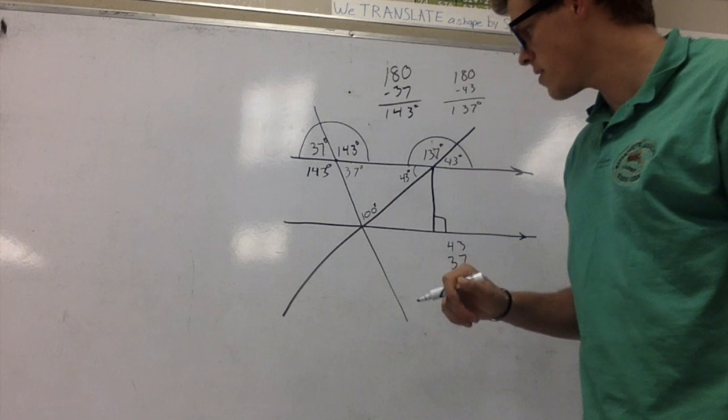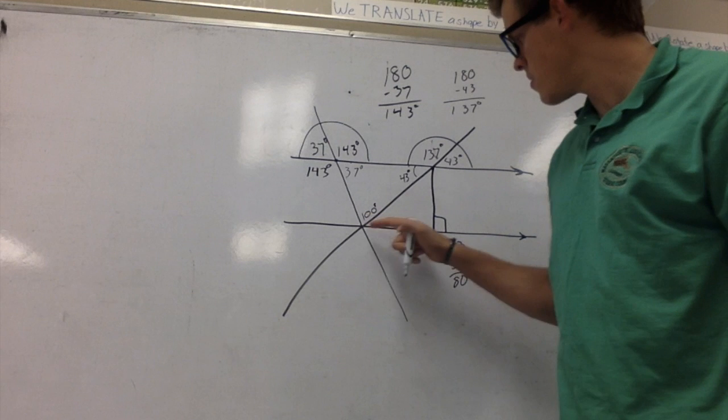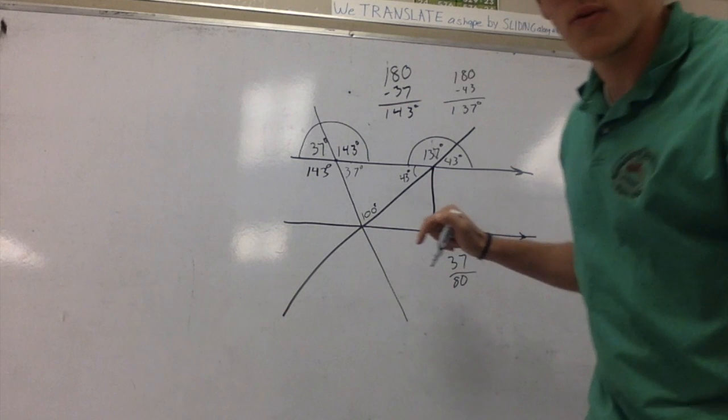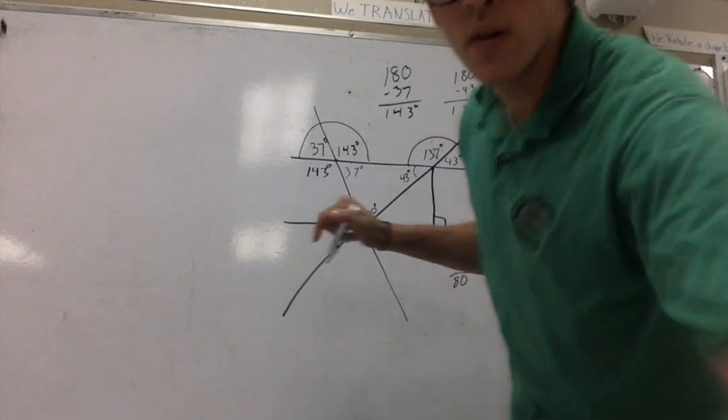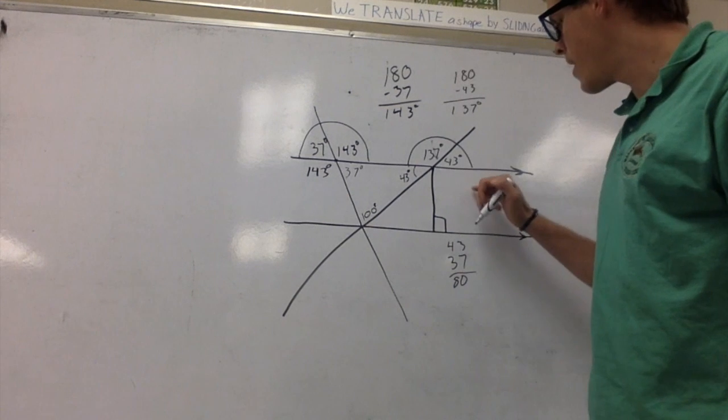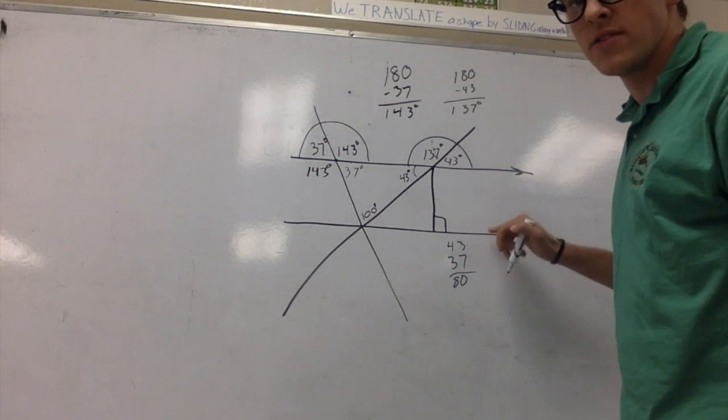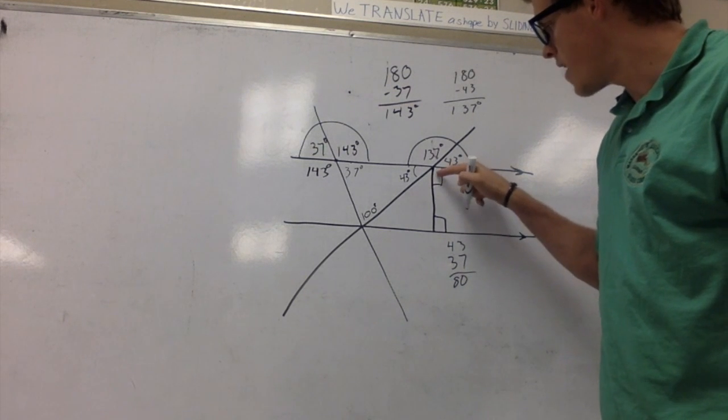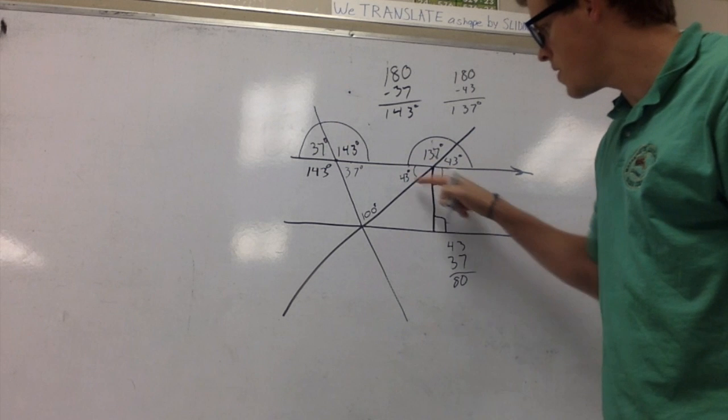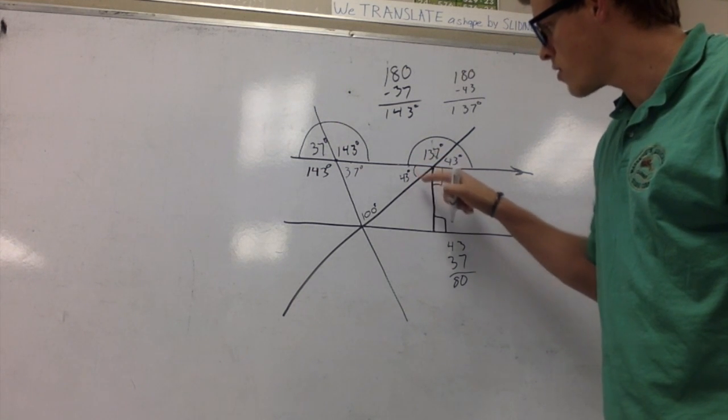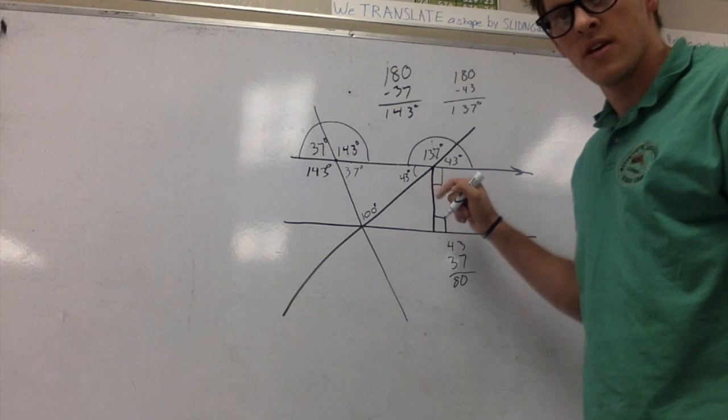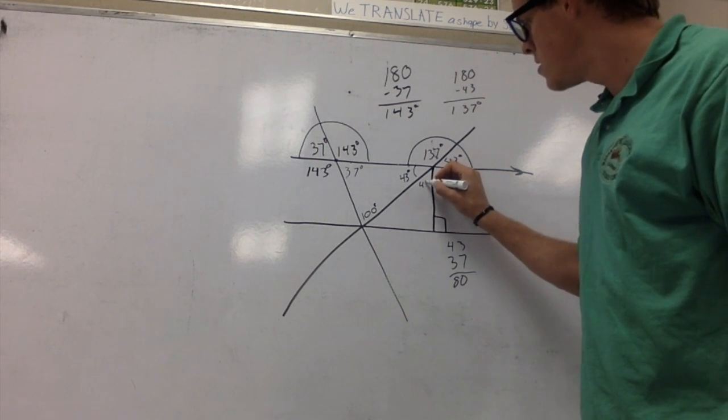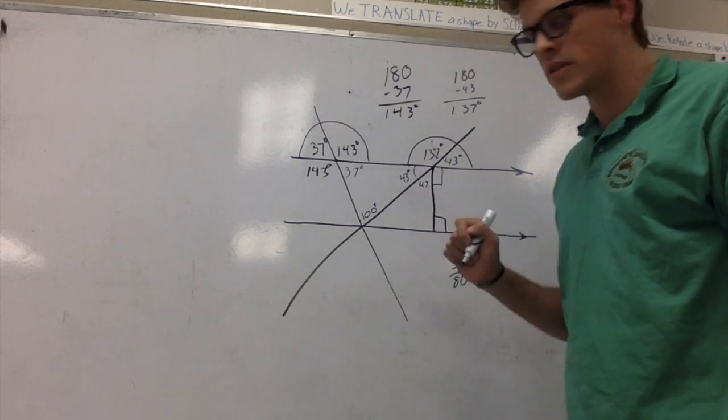From there, we can start to look at this one. We know that this is 90, and we also know that these are parallel lines, so we can see that that's going to be 90 as well. If that's 90 and this is 180, then these two are going to be complementary. 43 plus something else is going to give 90, so that should be 47 degrees.